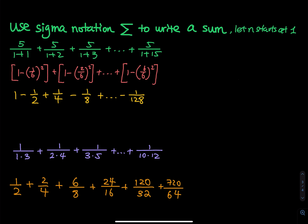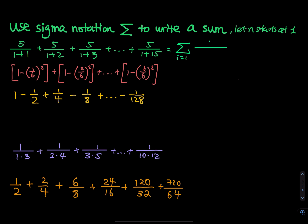In the first problem, notice that the fives are not changing. So what is changing? The second number — 1, 2, 3, 4, 5, all the way to 15. This is changing. That tells me there are 15 terms from 1 to 15. So I'm going to write a summation where i goes from 1, and this is always a 5, always a 1, and then i is changing. There are 15 terms.